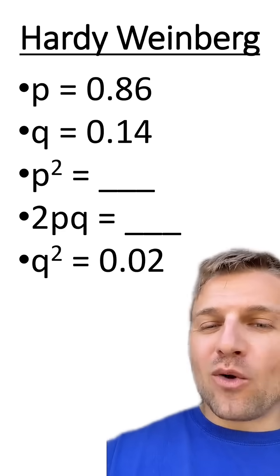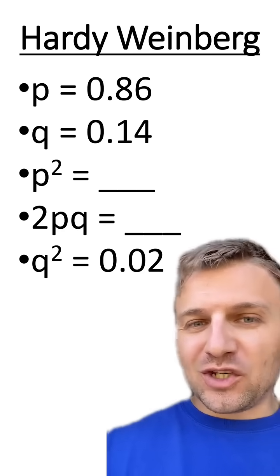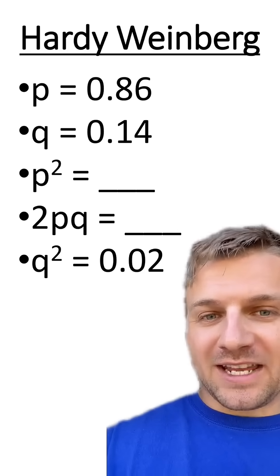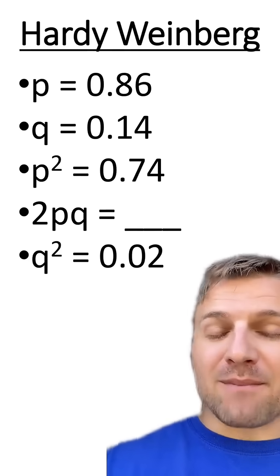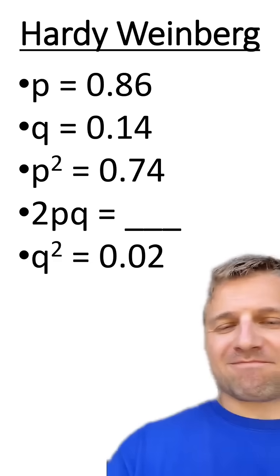Now, since we know p, we can figure out what p squared is. You can do this by squaring 0.86, because that's going to tell us what p squared is. And that means p squared is going to be 0.74.